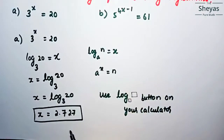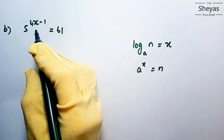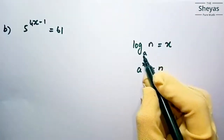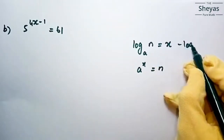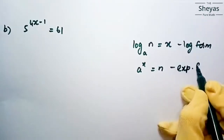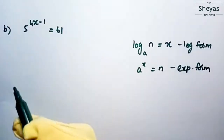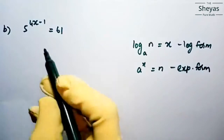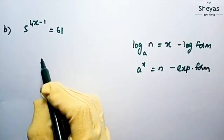Next problem — B: 5 power 4x minus 1 is equal to 61. The relationship is: log to the base a of n is equal to x is the logarithmic form, and a power x is equal to n is the exponential form. The question is in exponential form, and we are going to solve it using logarithms. So first this exponential form should be converted to logarithmic form.